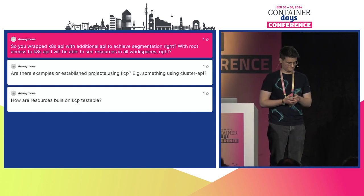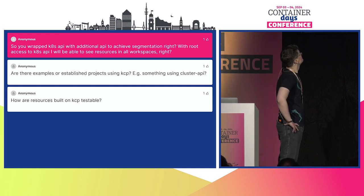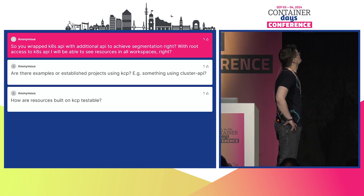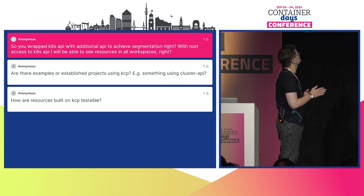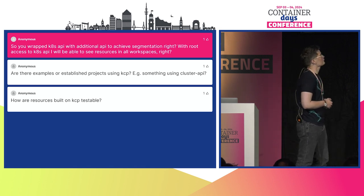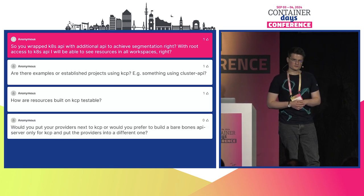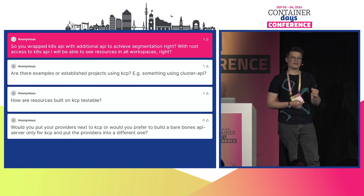Q&A: On whether KCP wraps the Kubernetes API with an additional API for segmentation — no. KCP is its own project based on the Kubernetes API server code, but it's not a wrapper. It takes the Kubernetes API server code and extends it. There isn't really an underlying API layer where you'd see more if you had access to it. It's its own thing — there's no lower layer, except for etcd, which is also there with regular Kubernetes.